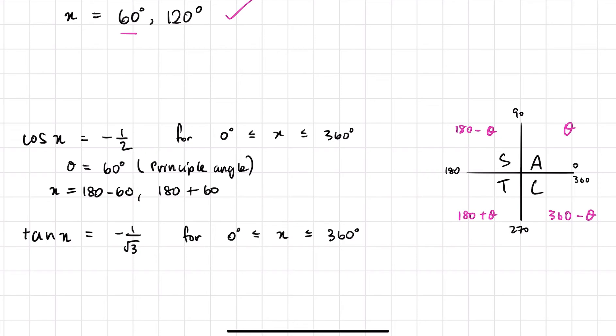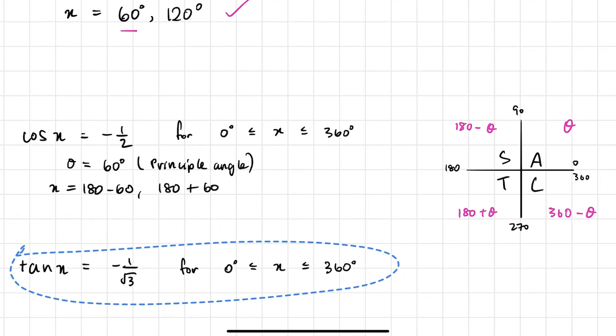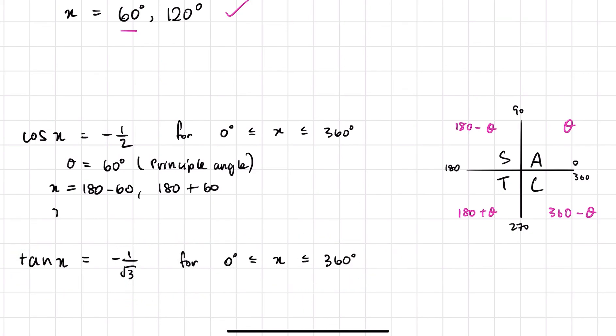I should change this to theta maybe just to make it more clear. So now x is equal to 120 degrees and 240 degrees. One thing that is great about math is you have a calculator. So once you do this process and you're not sure or you want to check if your answer is correct, you can just put it back into the calculator and say cos 120, you will get negative a half.